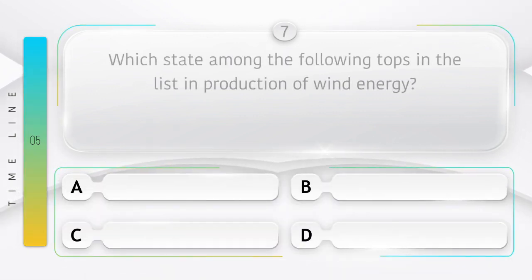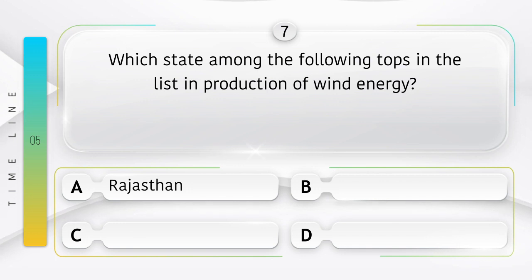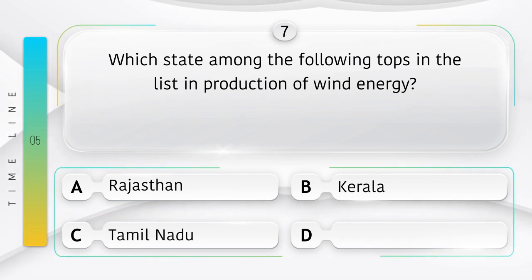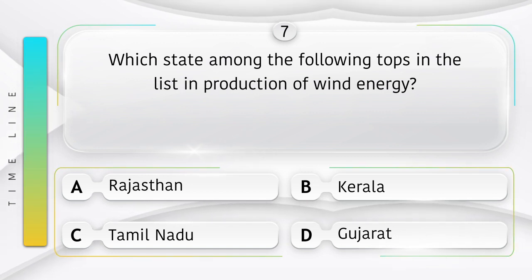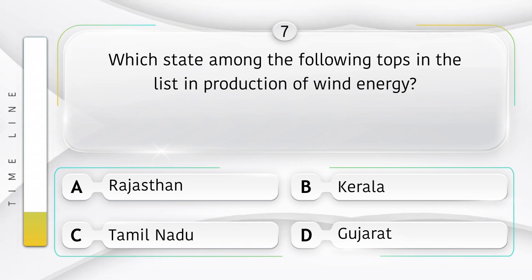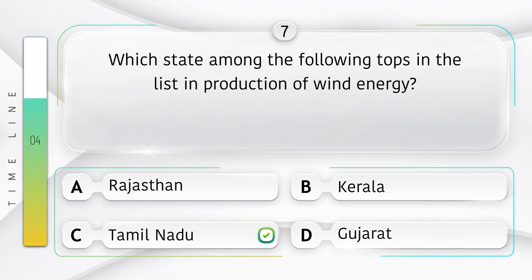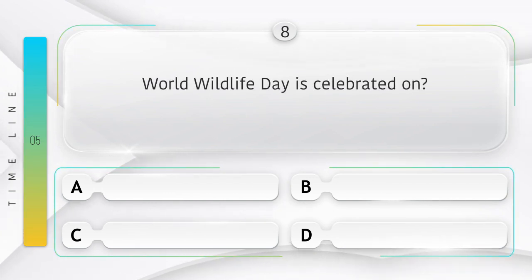Which state among the following tops the list in production of wind energy? Option A: Rajasthan, B: Kerala, C: Tamil Nadu, D: Gujarat. Answer is option C, Tamil Nadu.